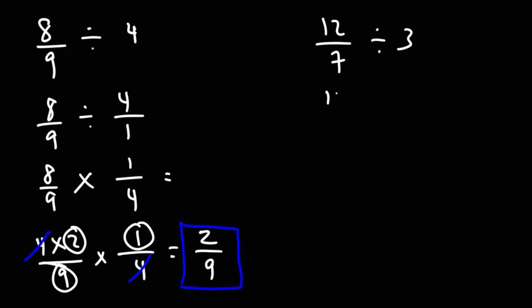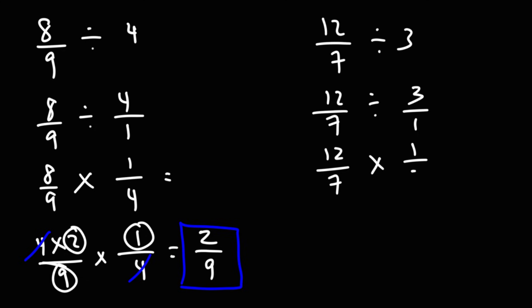Let's do the same thing for the last example. So 3, we can write that as 3 over 1. Let's keep the first fraction the same, change division to multiplication, and flip the second fraction.